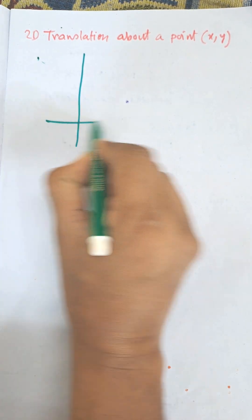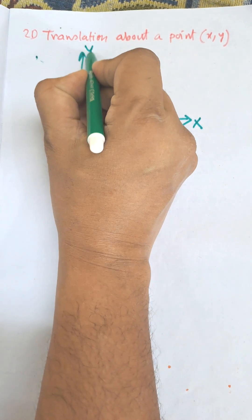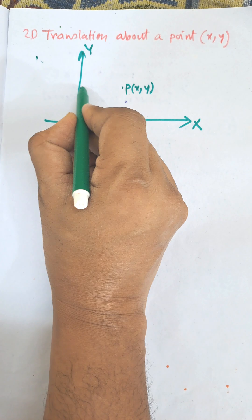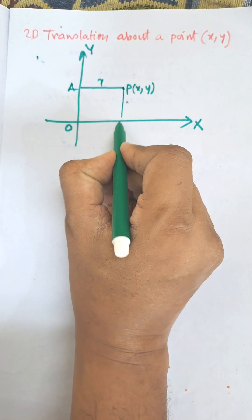Here this is the Cartesian coordinate system - this is the x-axis and this is the y-axis. The point is P(x,y), and the distance of this one is x, and distance of b to b is y.